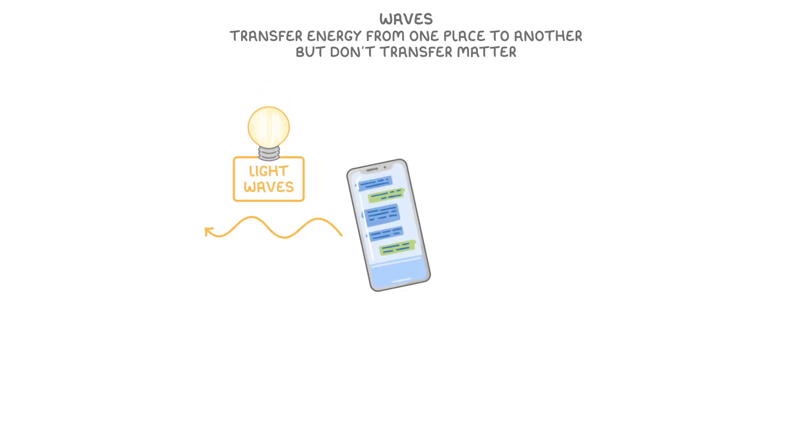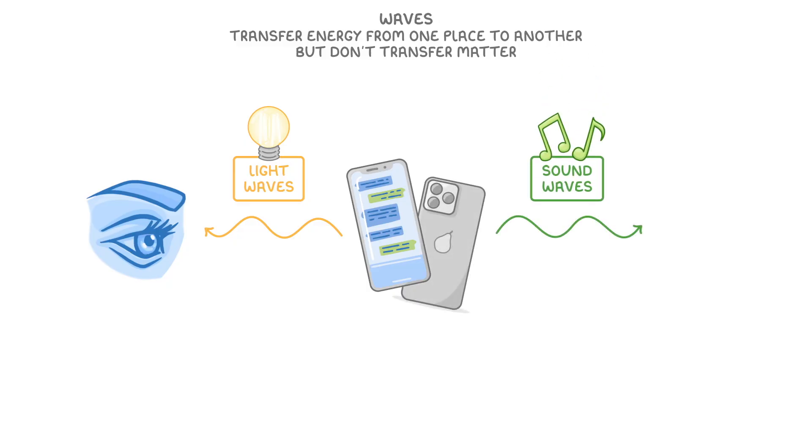The first thing to understand about waves is that they transfer energy from one place to another, but they don't transfer any matter. So when light waves pass from a phone screen to your eye, or sound waves pass from the speakers to your ear, only energy is being transferred.